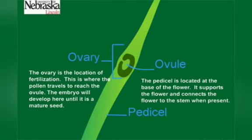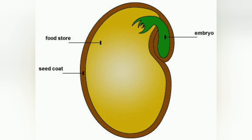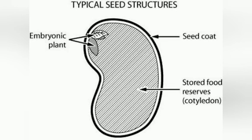Next we come to the seed. A seed is required for germination. It has a seed coat, a food store, and an embryo from where it germinates. The part where it stores the food is known as the cotyledon, and the embryonic part is where the plant grows. So that's it. Thank you.